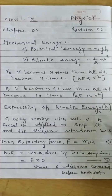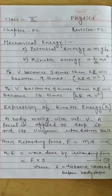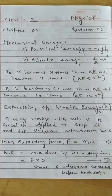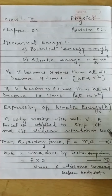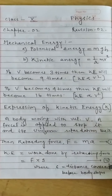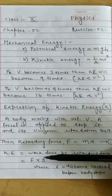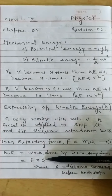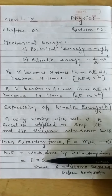Expression of kinetic energy: Let us consider a body moving with velocity V. An opposing force is acted on the body and the body stops after covering a distance S with uniform retardation A. The retarding force F is equal to mass into acceleration: F = MA. This is equation number one. Kinetic energy of the body is equal to the work done by the retarding force, so KE = F × S, where F is the retarding force and S is the distance covered by the body.